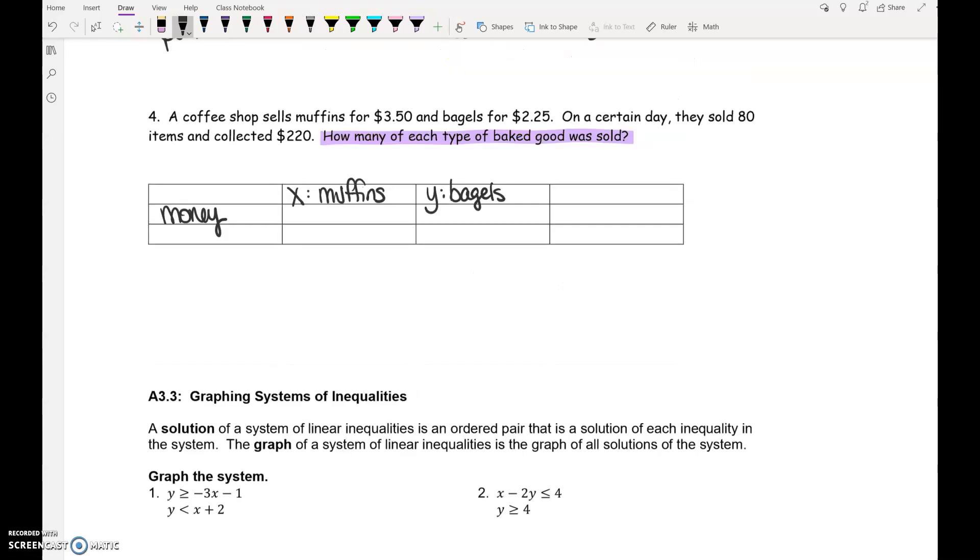Okay, so muffins are 350, so 350 times the number of muffins, bagels are 225, 225 times the number of bagels, that equals a total of $220. All of those numbers are money. The other total that we have is 80 baked goods. What should we put for that equation? X plus Y. The number of muffins plus the number of bagels equals 80.